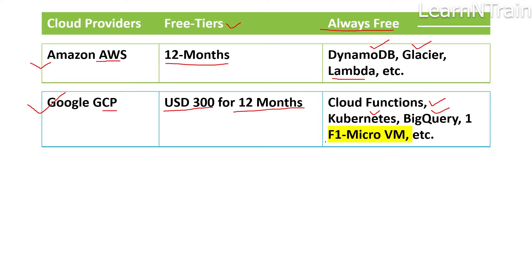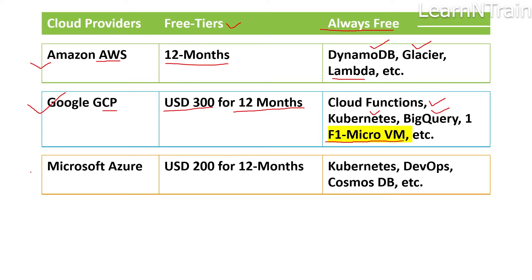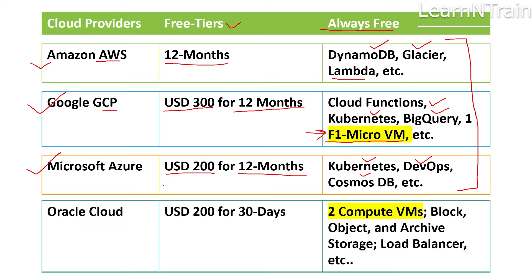The third one is Microsoft Azure — they also provide $200 USD worth of free services for 12 months, and you can use Kubernetes and other DevOps services, plus database and storage features. Just to be clear, I'm not listing all of their always free tier services here because that's not the focus of this session. Today we are focusing on which of these providers offer virtual machines.